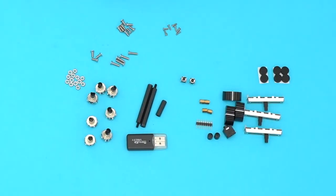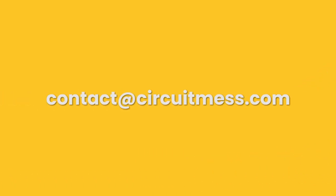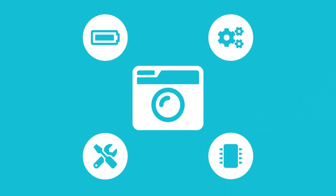And that is everything that should be included in the box. In case that something is missing please contact us at contact at circuit mess dot com. Send us a photo of everything that came in the box and we'll get back to you as soon as possible to resolve the issue.